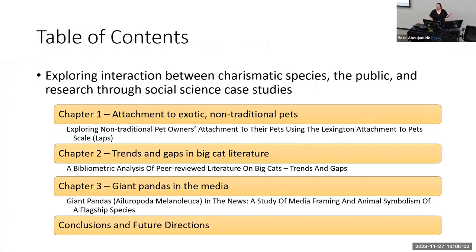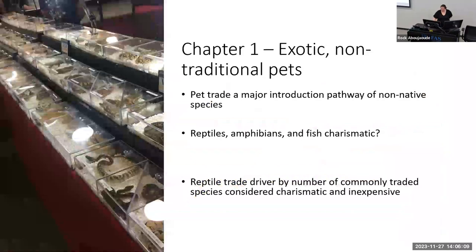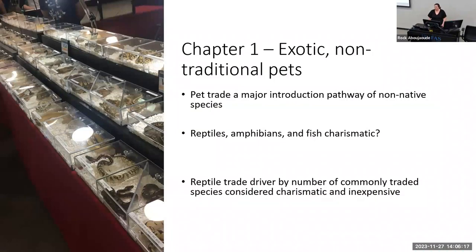Quick table of contents: I'll go over my first chapter, second chapter, third chapter, and then conclusions. My chapter one dealt with exotic, non-traditional pets. Non-native and invasive species threaten biodiversity, economies, and human health and well-being, with the pet trade being a major established introduction pathway of these non-native species, especially herpetofauna and fish.